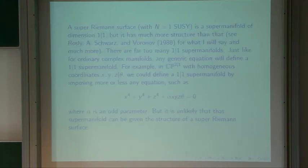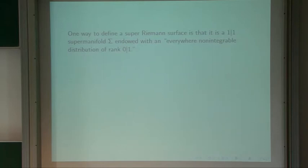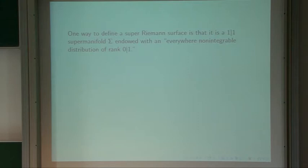So what is a super-Riemann surface? I'll give an algebraic geometer's definition. A super-Riemann surface is a complex supermanifold of dimension 1|1 which has an additional structure: a distribution of rank 0|1 that is everywhere non-integrable. A distribution is a sub-bundle of the tangent bundle, so a 0|1 distribution is a sub-bundle of rank 0|1.